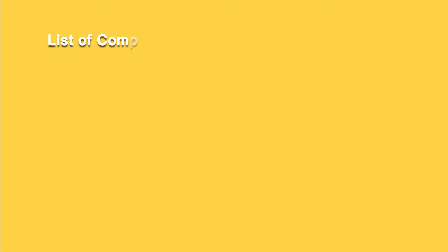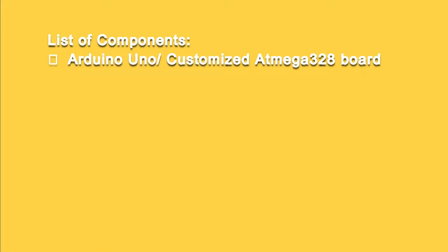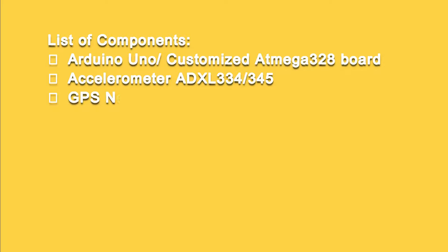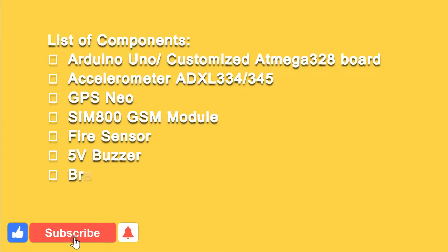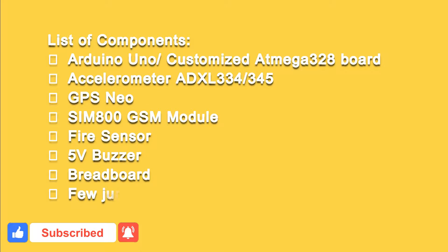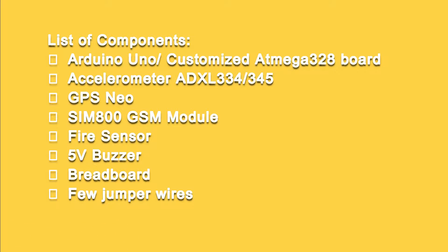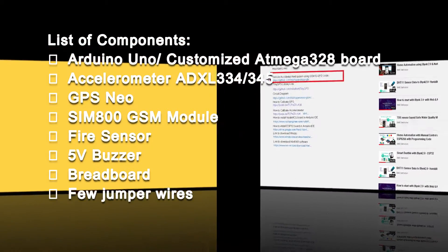To design this project we need the following components: Arduino Uno or customized ATmega328 board, accelerometer ADXL335 or ADXL345, GPS Neo, SIM800L GSM module, fire sensor, 5 volt buzzer, breadboard and few jumper wires. First of all I will explain the programming code, after that we will connect the hardware.